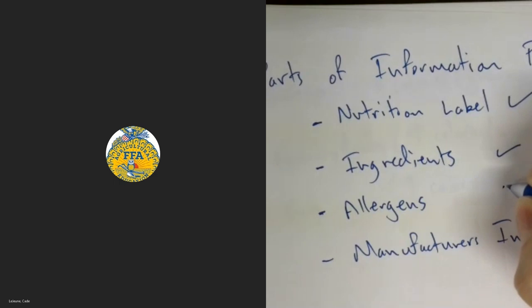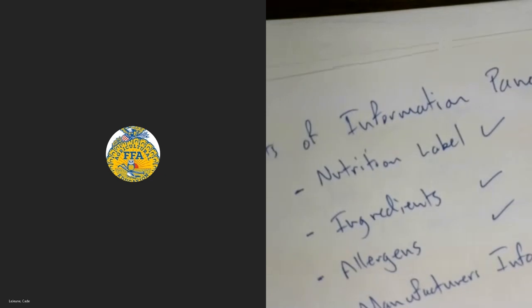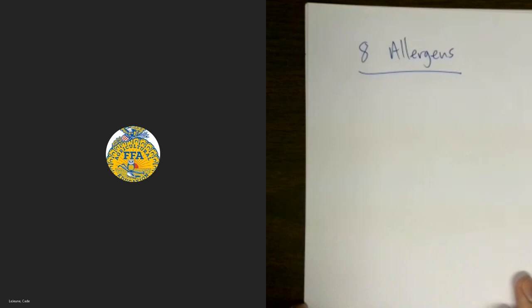Now let's talk about allergens — something I think is really important to know. Food allergens are becoming more common, maybe because we're more aware of them now. There are eight different allergens that the FDA requires to be labeled on a package. These are really easy to group. I'll go over what those eight allergens are and then we'll look at some packages to find them.